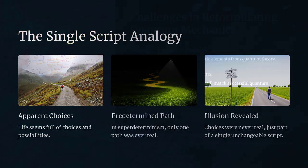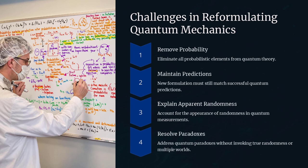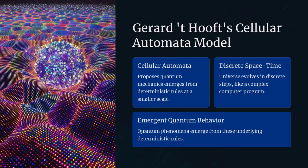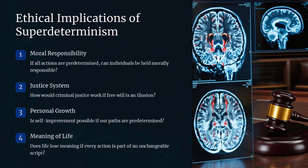At first glance, this seems like an elegant loophole in Bell's theorem. But at what cost? If super-determinism is true, it effectively eliminates free will. Our sense of choice would be an illusion, dictated by pre-existing conditions set at the birth of the universe.